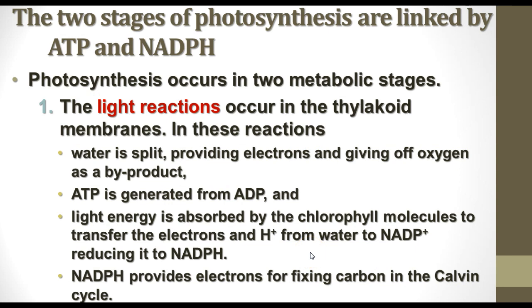There are two stages of photosynthesis, and they're linked by the molecules ATP and NADPH. ATP — adenosine triphosphate — is the main energy currency of the cell. NADPH is an electron carrier molecule similar to the NADH we saw in cellular respiration. The easiest way to remember which belongs to which process: NADPH has a P in it, and the P stands for photosynthesis. It does basically the same job that NADH and FADH2 do in cellular respiration.